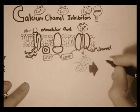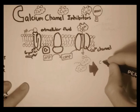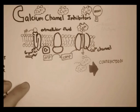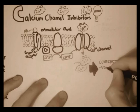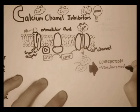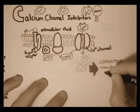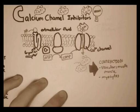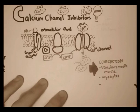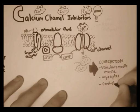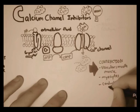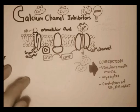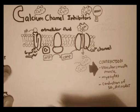If it is a myocyte, calcium will cause contraction of the myocytes. If it is a vascular smooth muscle, it contracts the vascular smooth muscle. It also increases the conduction of the atrioventricular nodes and the sinoatrial nodes, all of which increases blood pressure.